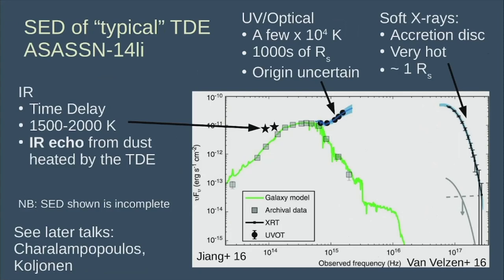This is the SED of maybe a typical TDE - ASASSN-14Li, which was a TDE observed quite early on and a big example. We have some soft X-rays coming from an accretion disk forming from the disrupted star, which is quite compact and very hot. Then we have UV and optical emission with a blackbody of about 30,000 Kelvin that remains hot for a very long time, and is much more extended. The origin of this emission is uncertain.